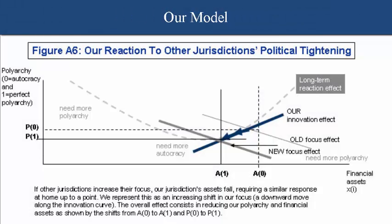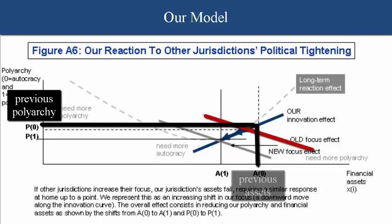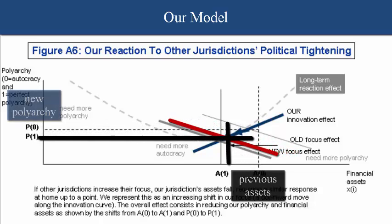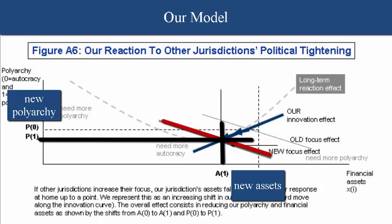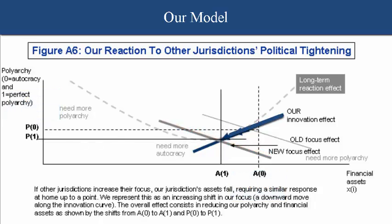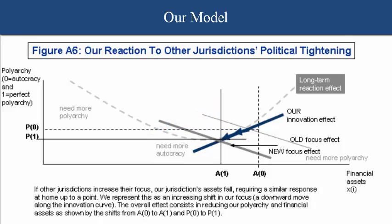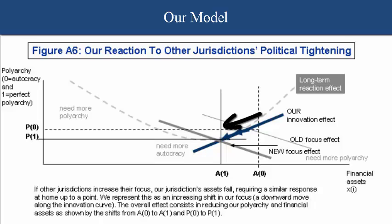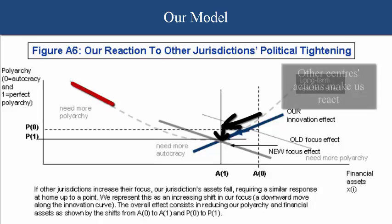As a jurisdiction becomes more focused, it provides incentives to other jurisdictions to also increase their own focus in order to stay competitive. We reflect this as a leftward shift of the focus effect in Figure A6, with a decrease in polyarchy and a decrease in financial assets as we simply respond to that other jurisdiction. Over time, we see innovation effects similarly shifting to the left, reflecting an increase in polyarchy even though financial assets continue to slide. As a stock of innovations brings on line increases in foreign investment, the whole process reverses, with both polyarchy and financial assets increasing. Eventually, polyarchy and financial assets reach a dynamic equilibrium, keeping in mind that jurisdictions are always acting and reacting vis-à-vis each other.